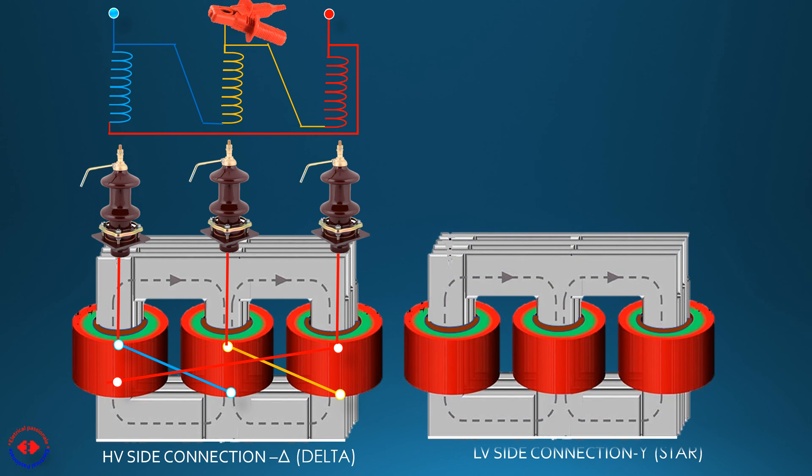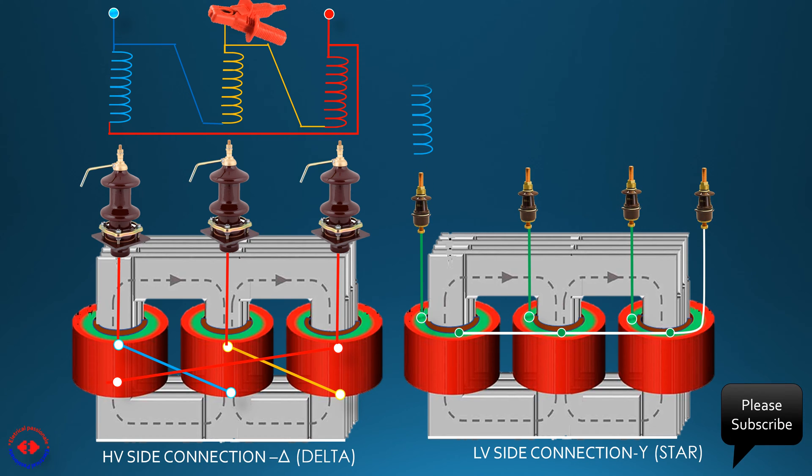LV side of the transformer has star-connected winding. Similarly, during testing, any of the LV terminal bushings is to be connected with the megger.